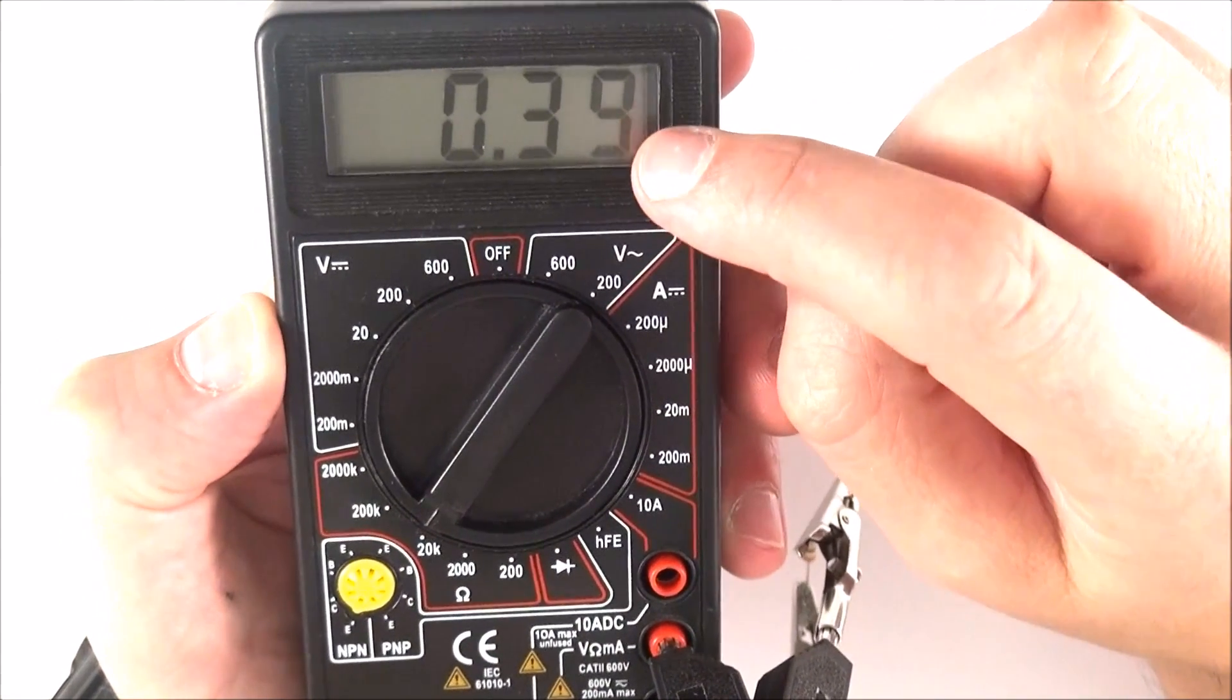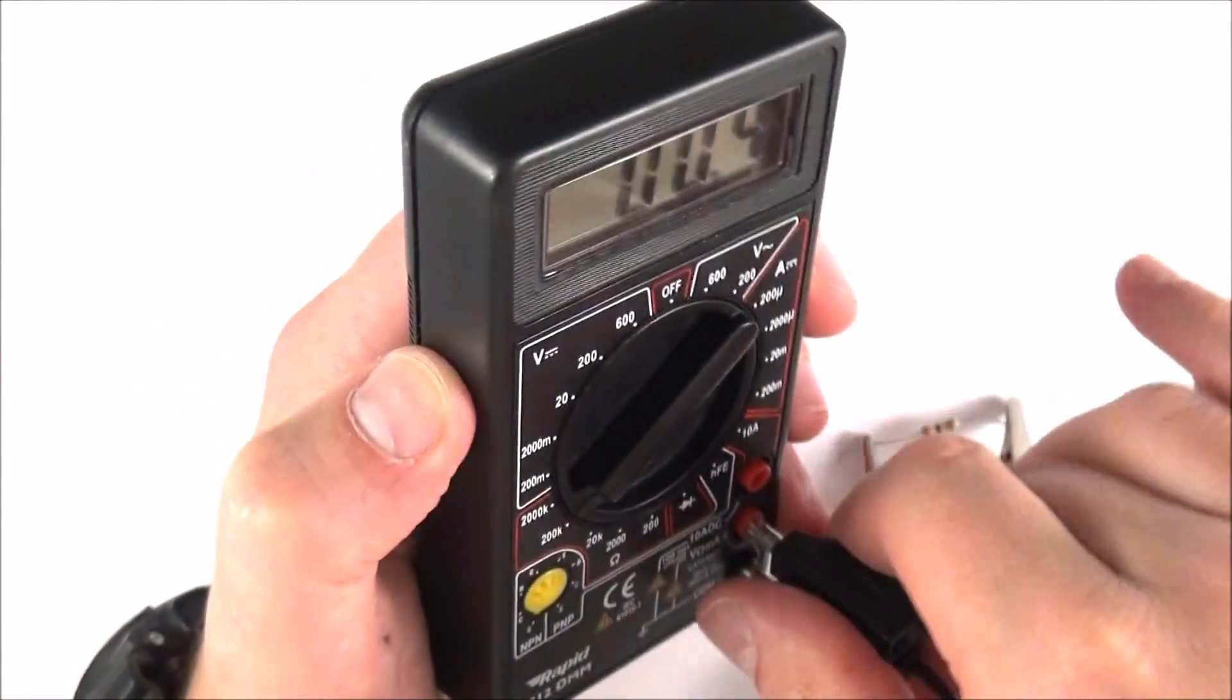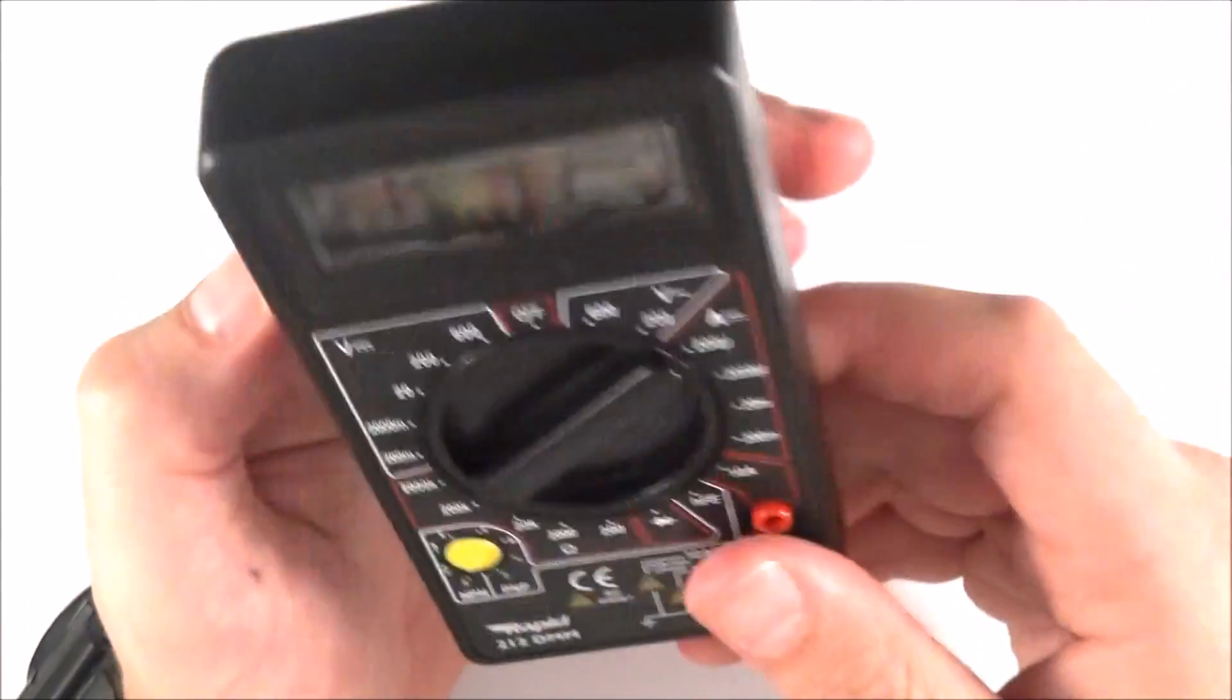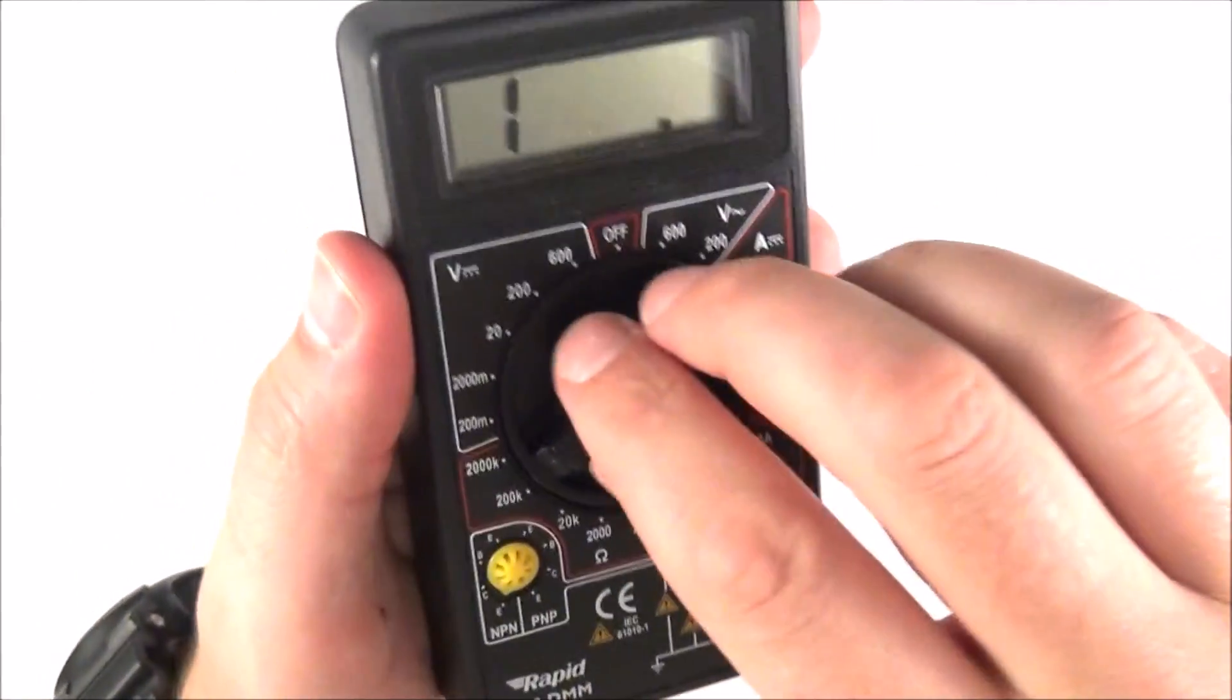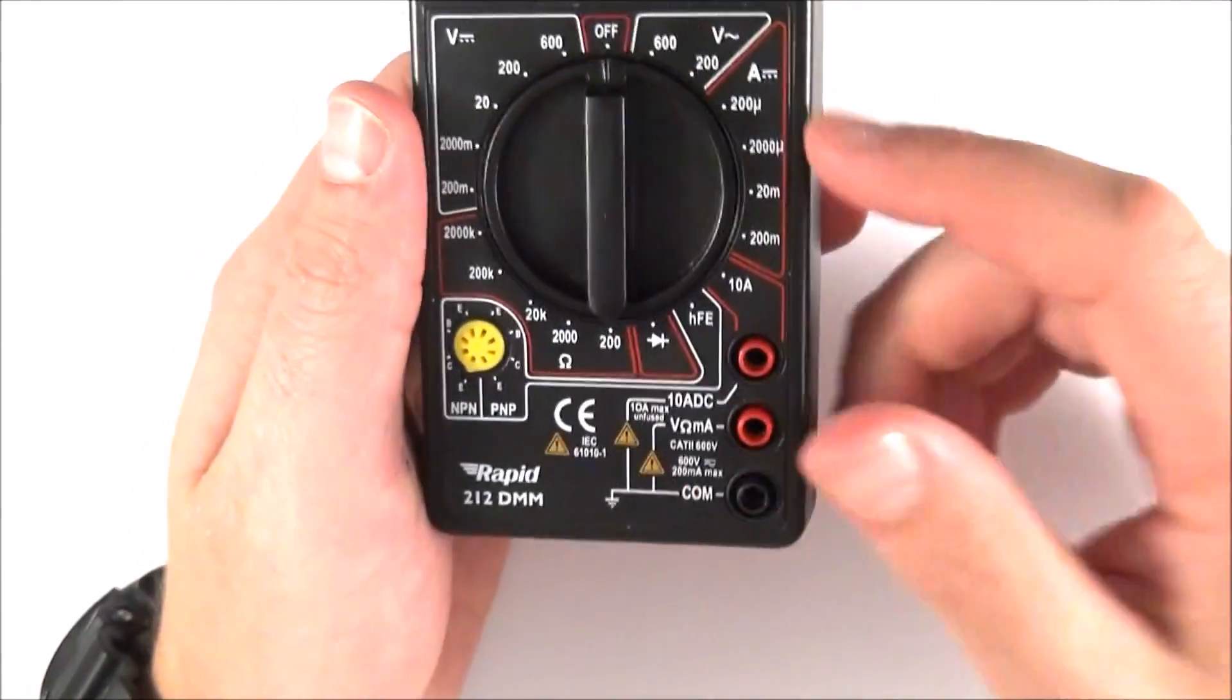Finally, when you finish using a multimeter, don't leave them turned on. It's really annoying when you come back to use one of these and all the batteries are flat. Turn it to the off position, and that'll just make it easier for you next time that you come to use this.